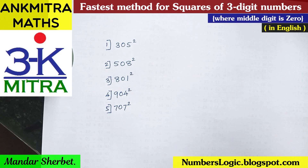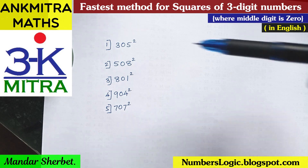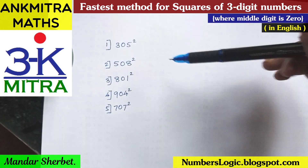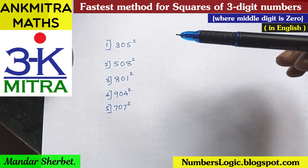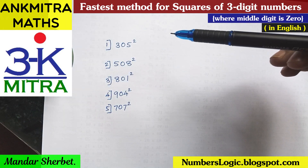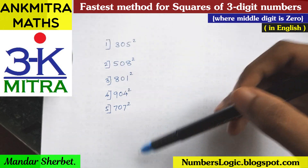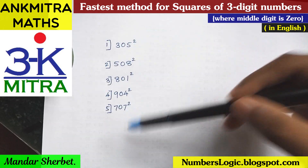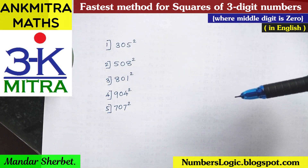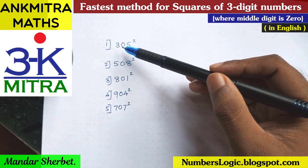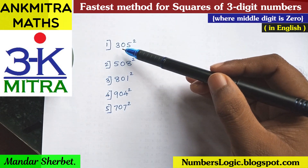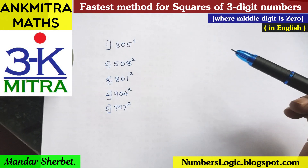Hello everyone. In this video, I will be explaining a squares calculation method involving three digit numbers, but there is a special condition here. All these three digit numbers have the middle digit, or the second digit, as zero.